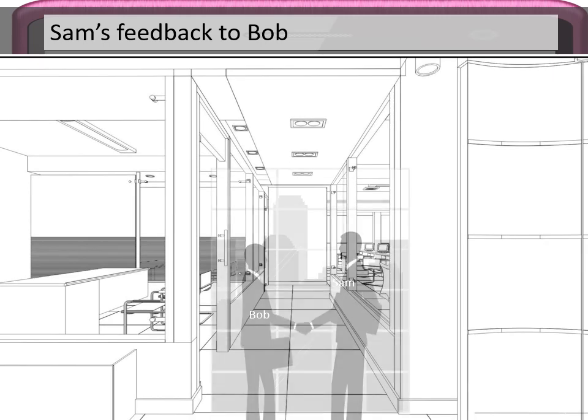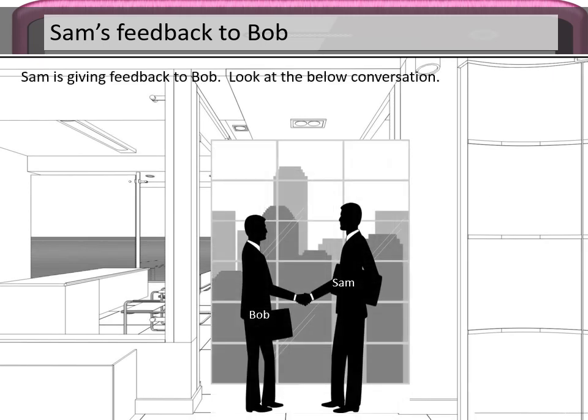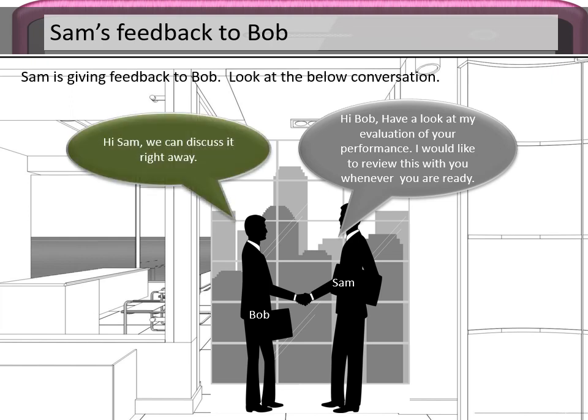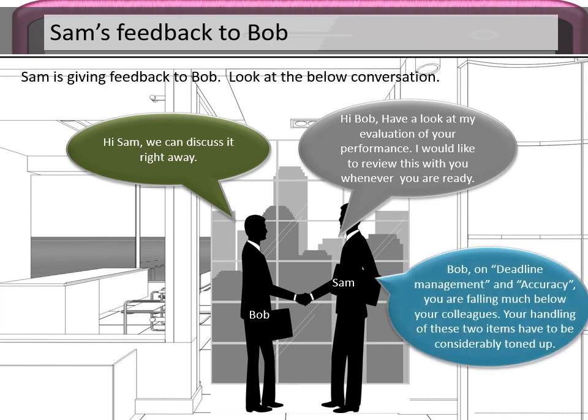Here, Sam is giving feedback to Bob. Sam says: 'Hi Bob, have a look at my evaluation of your performance. I would like to review this with you whenever you're ready.' Bob replies: 'Hi Sam, we can discuss it right away.'